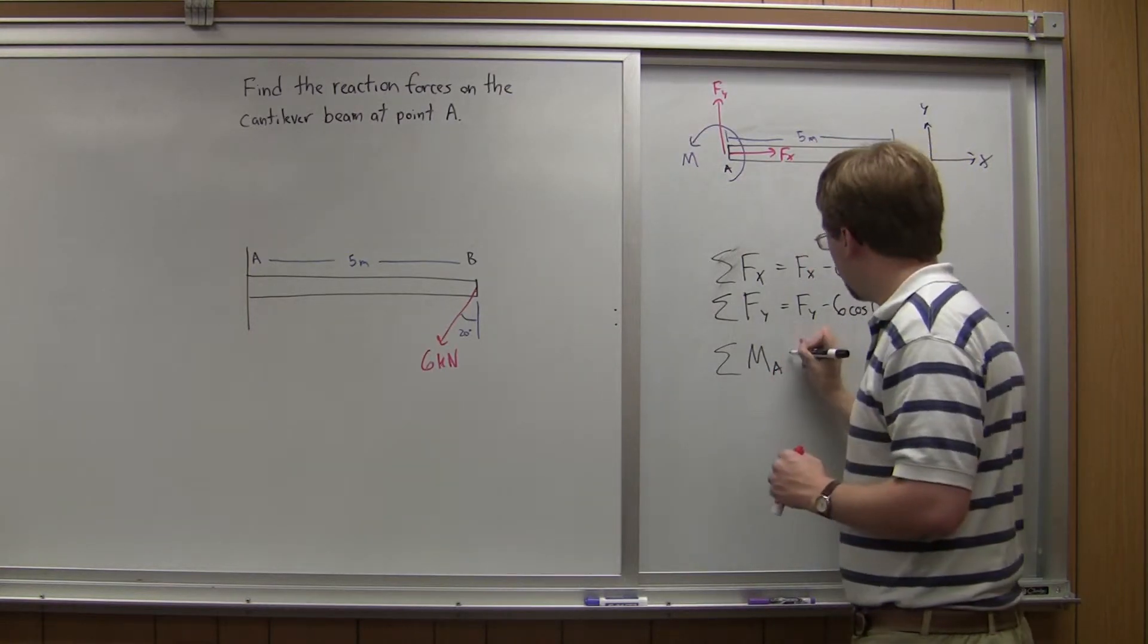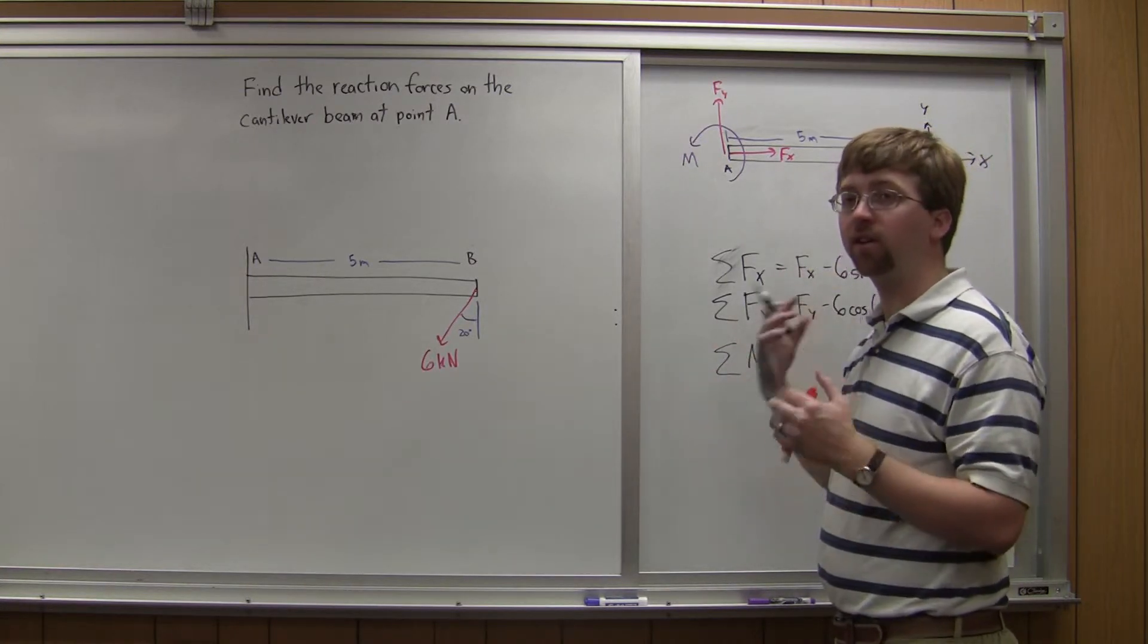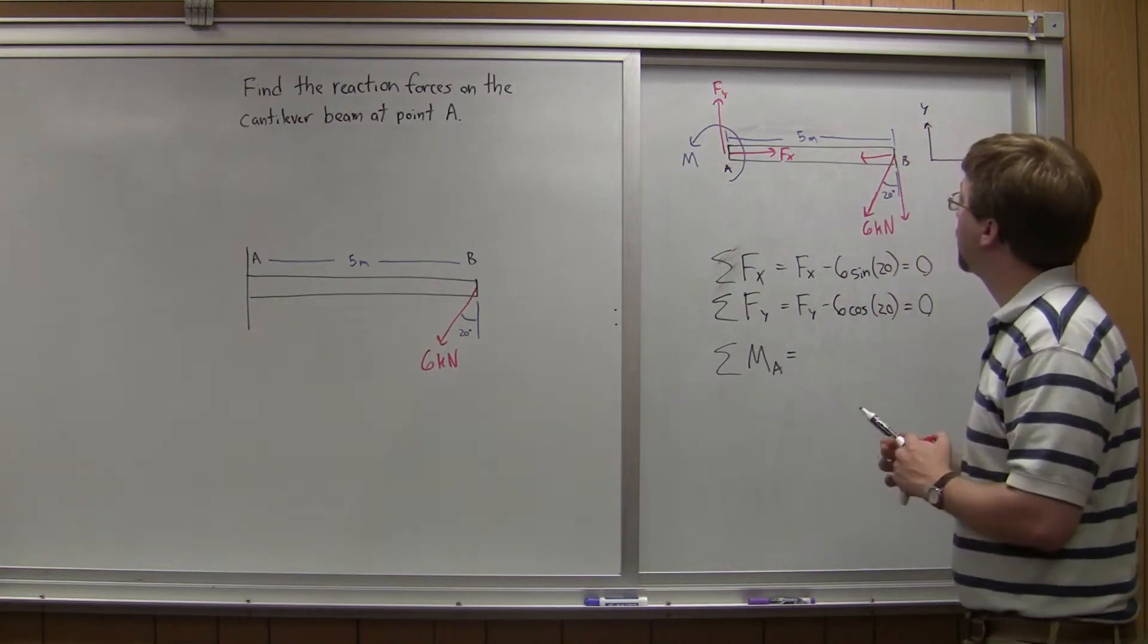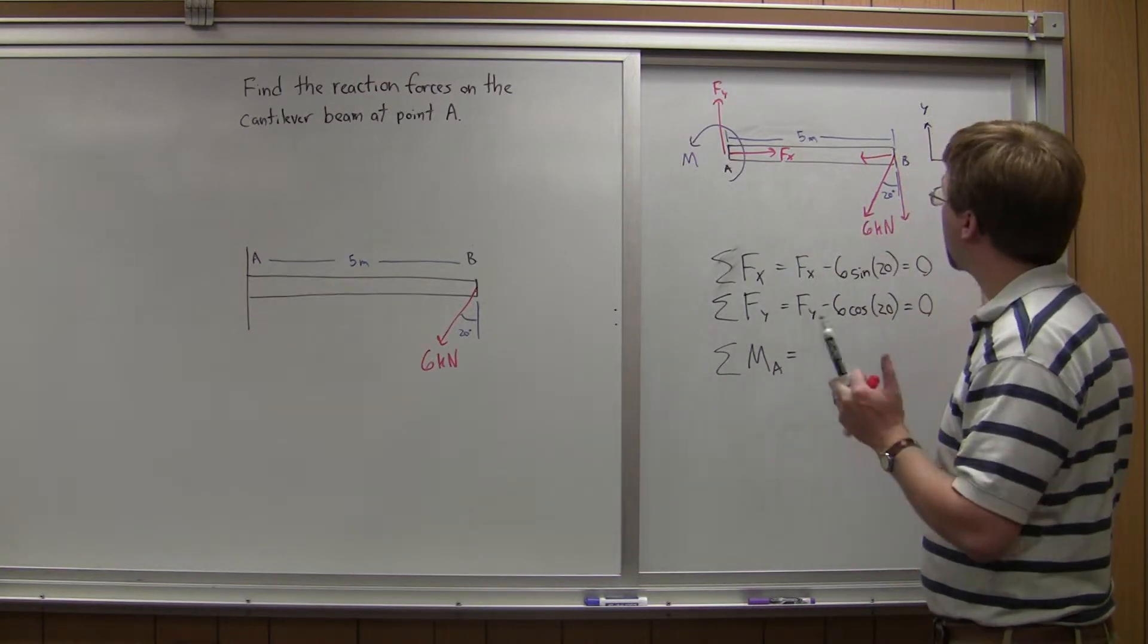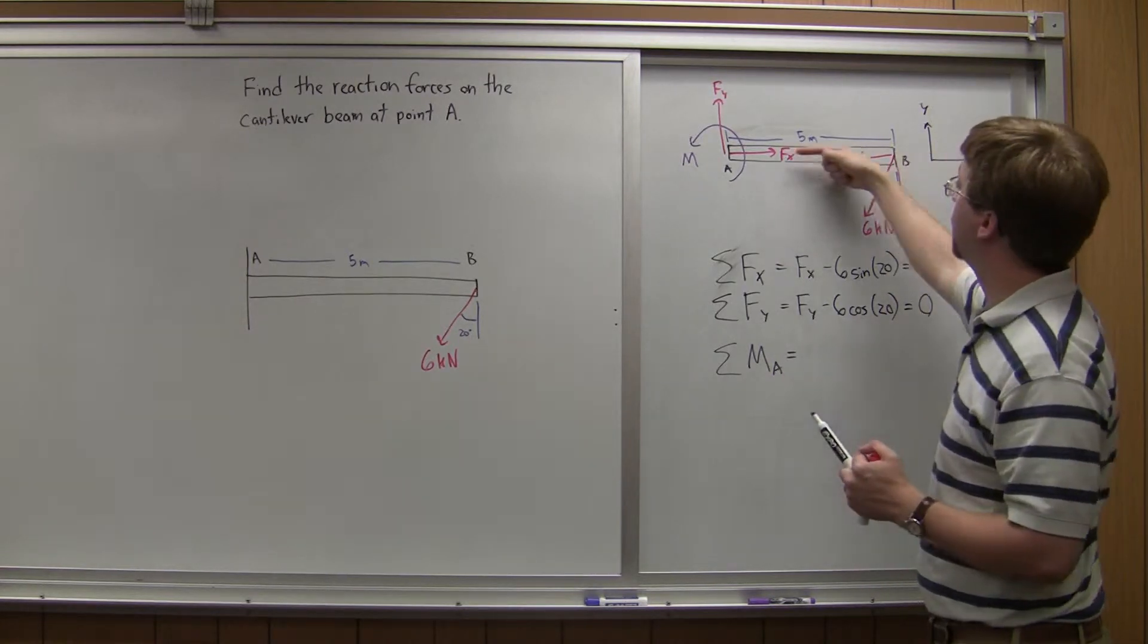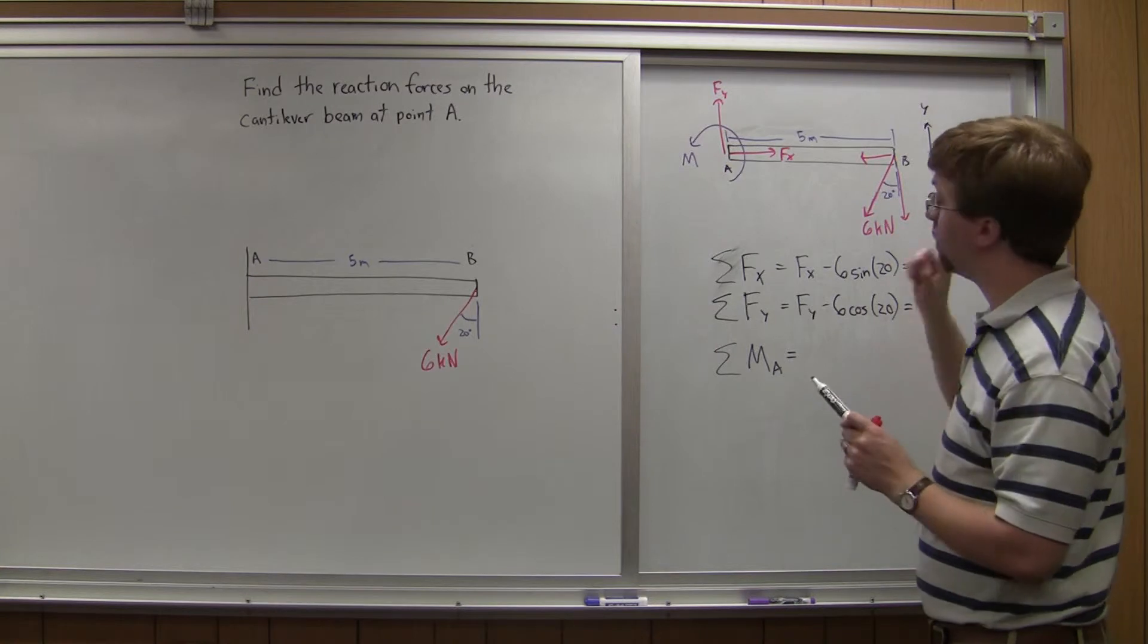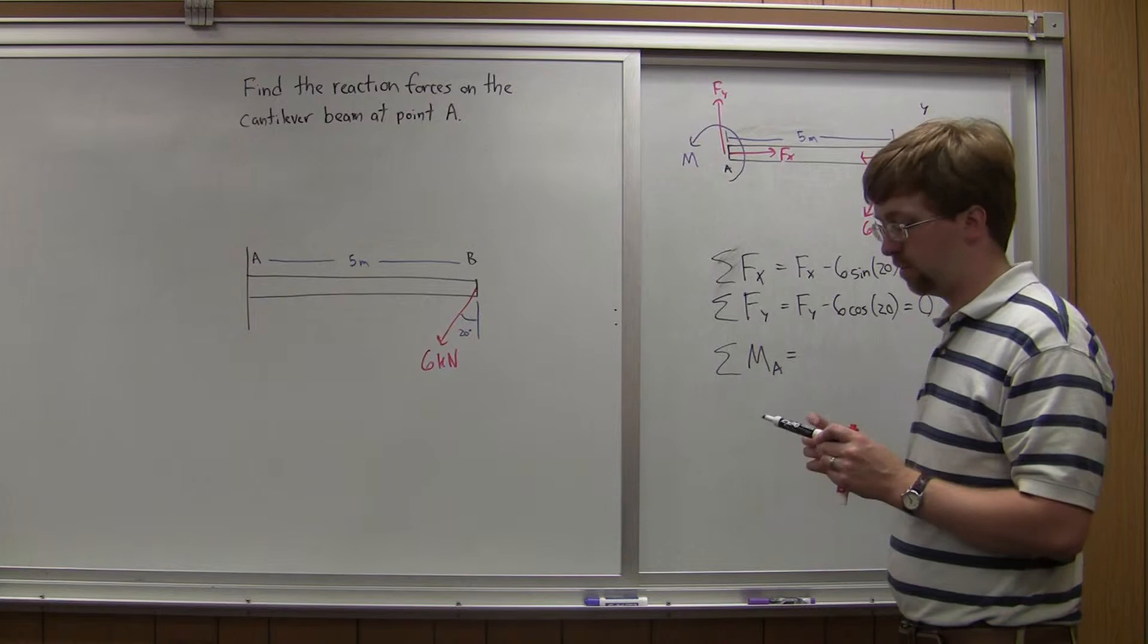The unknown forces, Fx and Fy, since they're acting through that point, they're not going to create any moment. But this, over here, this is going to create a moment. We can think about it in two ways. We can either find the perpendicular distance for this moment, or I can look at the x and y components of this force. The x component of this, it's still acting through point A, it's not going to exert a moment, but the y component is.